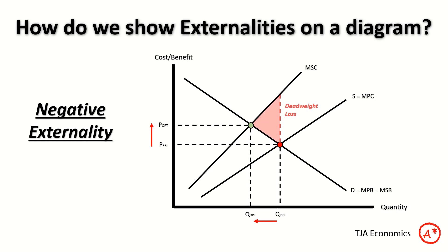We can say there is deadweight loss caused by the overproduction of cigarettes. Q' is greater than Q-opt — we are producing more cigarettes than society would optimally like. The difference between Q' and Q-opt is overproduction, and that causes deadweight loss, as shown by that red triangle on the diagram.